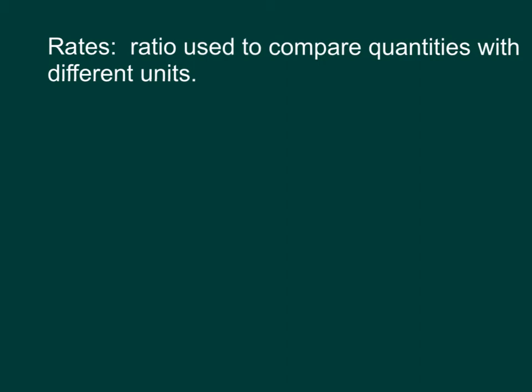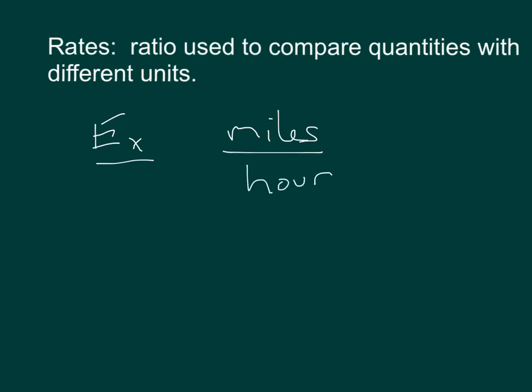Today we're going to talk about rates. A rate is a ratio used to compare quantities with different units. A pretty common example would be miles per hour — here you can see that we have two different units and we are using a ratio to compare these.